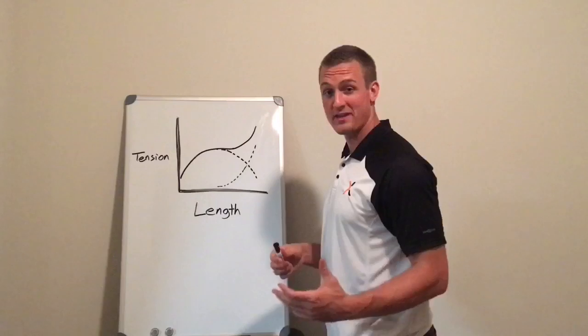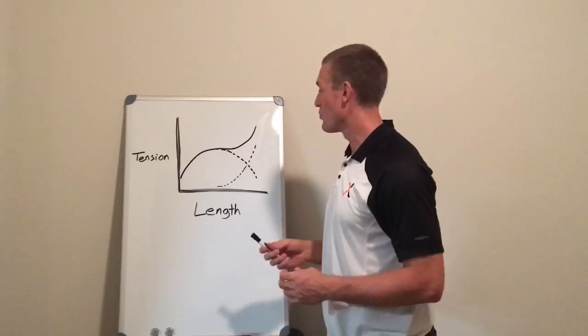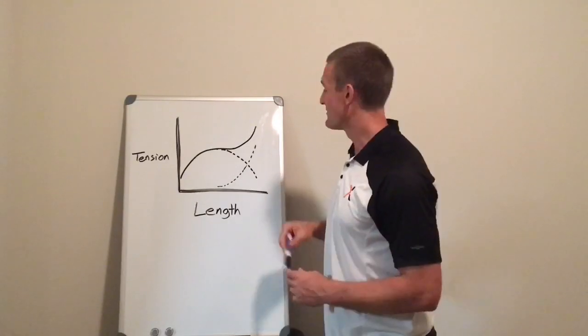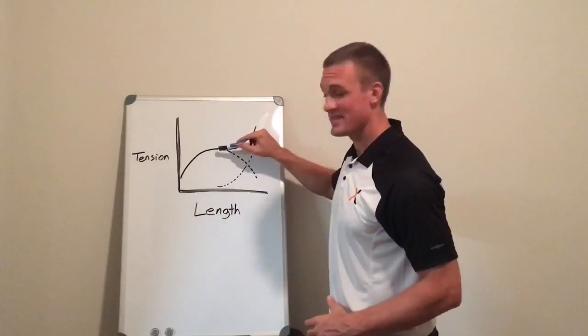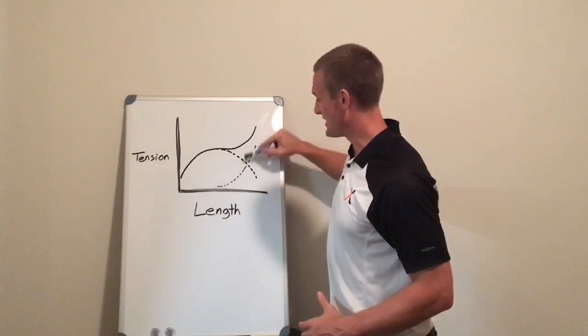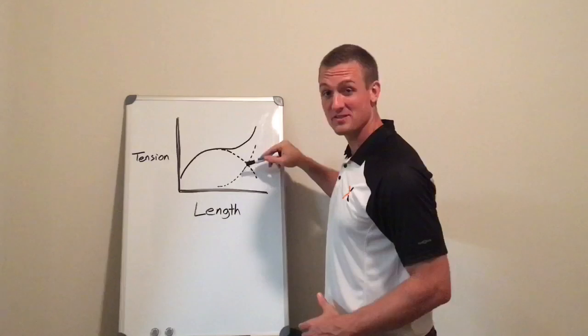Now when it comes to strength training, the general consensus is that we want to use a range of motion that lengthens muscles enough that they can produce a lot of active tension, but that we probably don't need to stretch them out so far over here where we're losing active tension and gaining more passive.